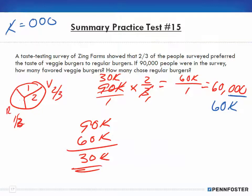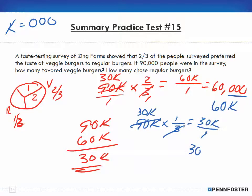I could have done it another way. Since I know the regular burgers are one-third, I could have taken 90,000 and multiplied that by one-third. Reducing and canceling gives me 30,000. So I would have come up with 30,000 over 1, which is 30,000. I could have done it either way and arrived at the same answer.